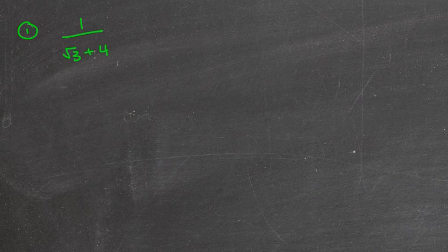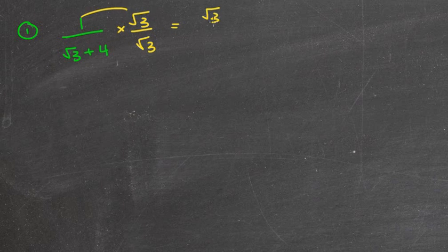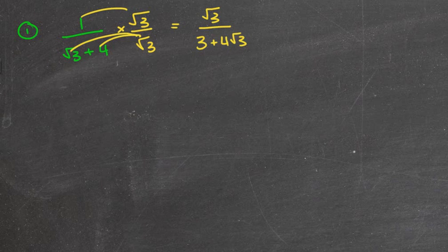Further rationalizing means questions like one over root three plus four. The denominator has two different terms going on. You might think: can't I just times it by root three over root three like before? Let's test it. One times root three is root three. Root three times root three is three - that worked nicely. But four times root three gives four root three. Have I rationalized the denominator? No, because I still have an irrational number in the denominator. So unfortunately that method did not work.